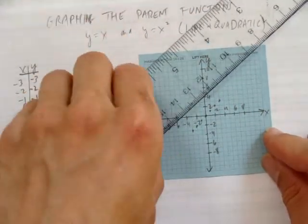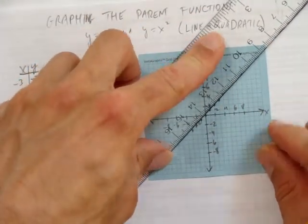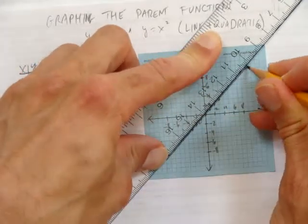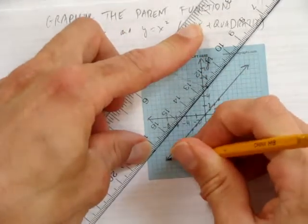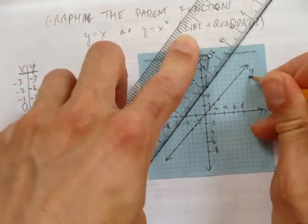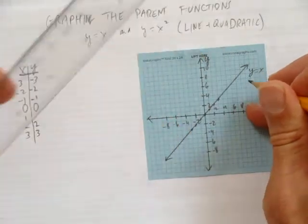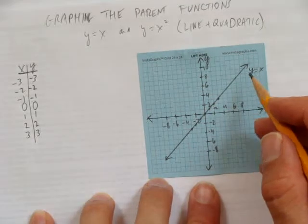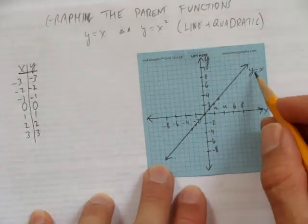And I was just grabbing a ruler. Now we can connect the dots. Steady line. Connect them. Put arrows to show this line goes on forever. And label it y equals x, the line. Notice that when I drew my line, I put arrows on the line as well to show it goes on forever. And I labeled its equation y equals x.